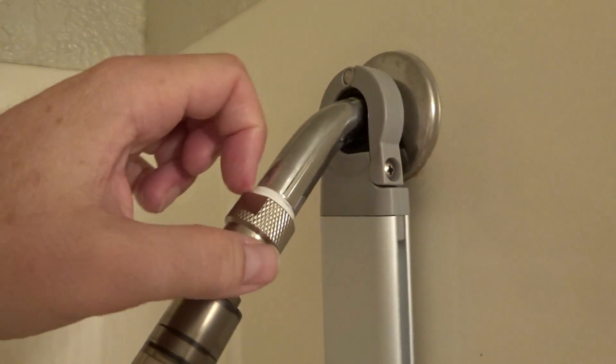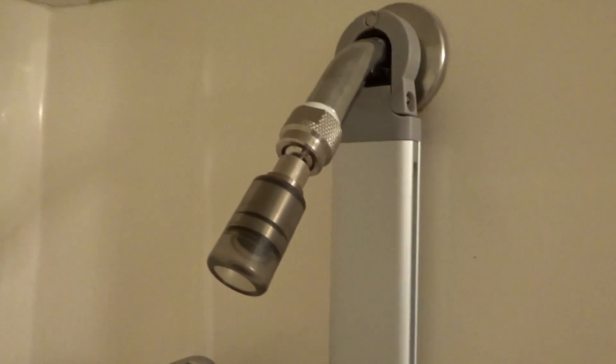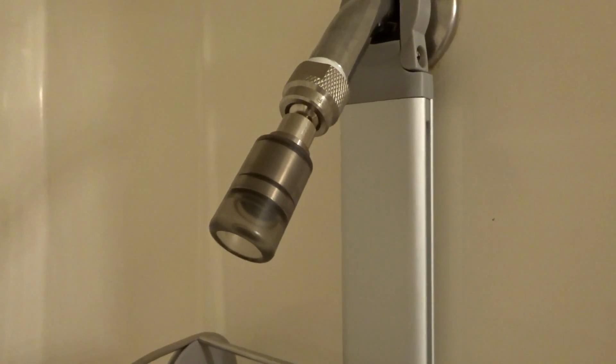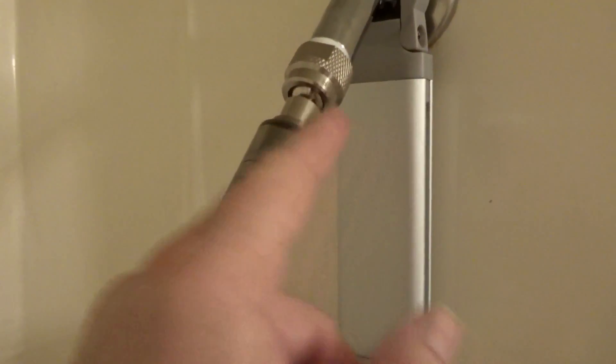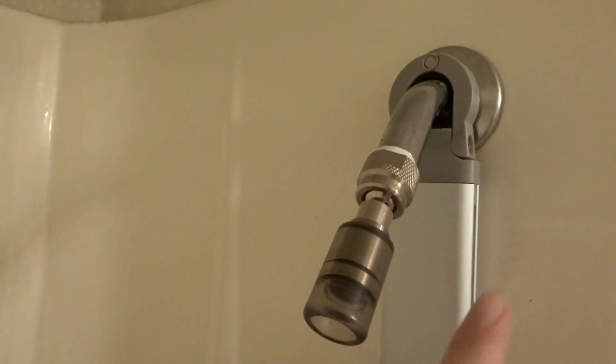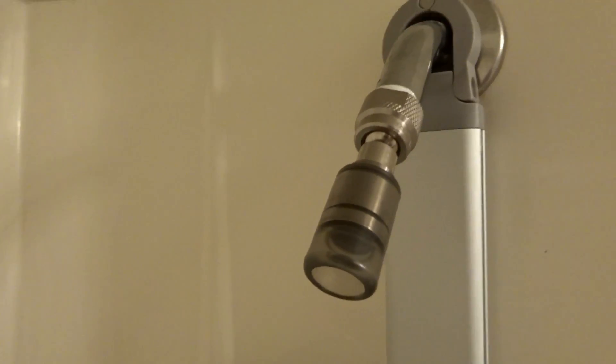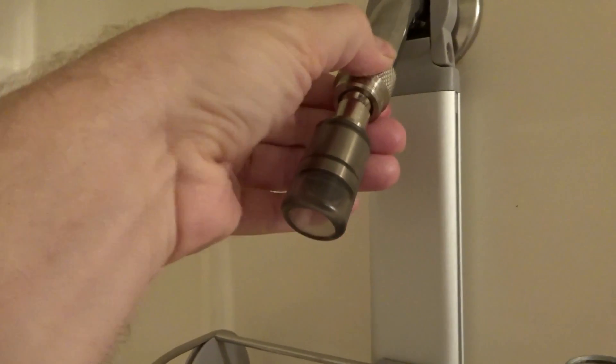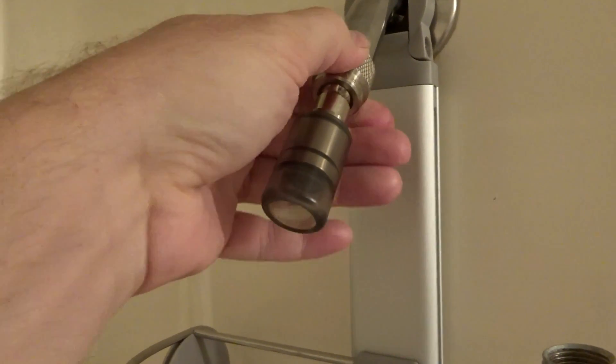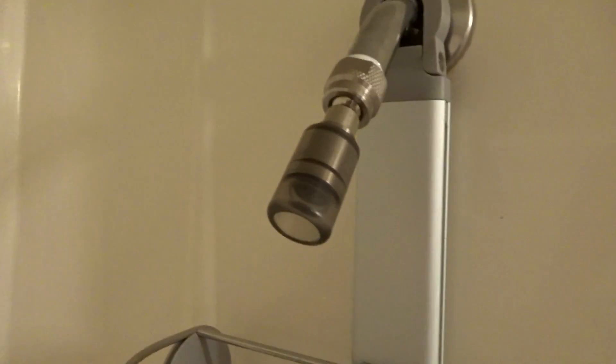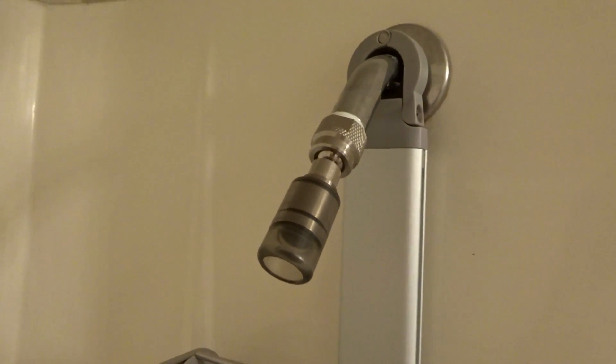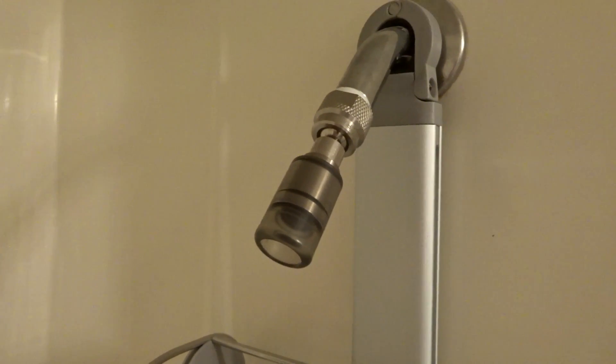So this white stuff here is Teflon tape. Sell it at Home Depot, Lowe's, any hardware store for about a dollar. Just wrap it around clockwise and do maybe six or seven turns. Then put the shower head on and tighten it up by hand. You don't need to use a wrench on there. Hand tight should be good enough. So anyone, whether or not you have plumbing experience, could exchange this out, swap this out easily.